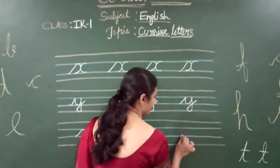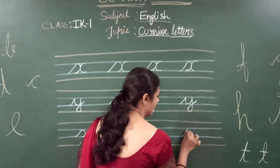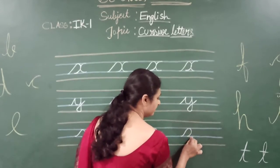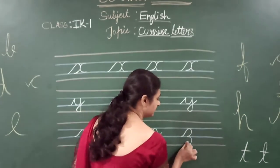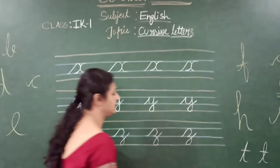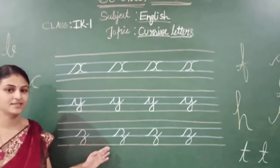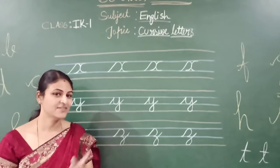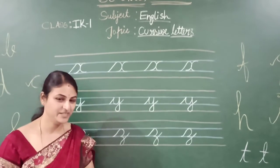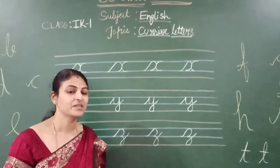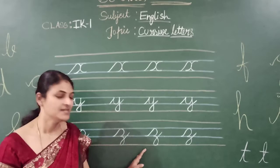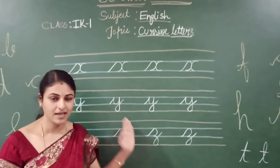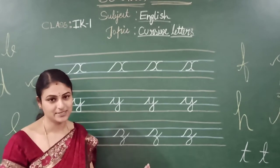Z: slant, curve, backward curve, slant. This is the letter Z. So by this we have completed till Z — cursive letter A to Z.